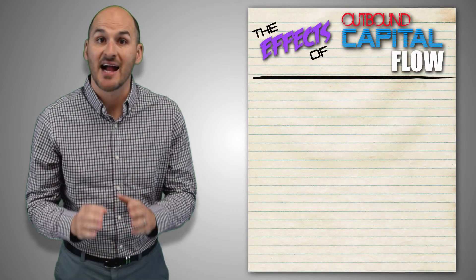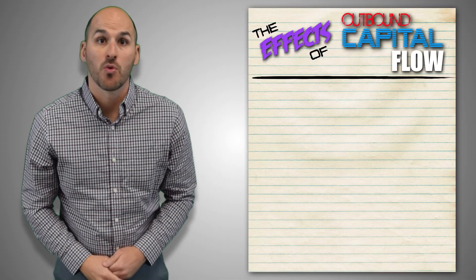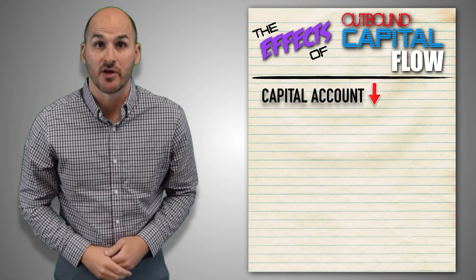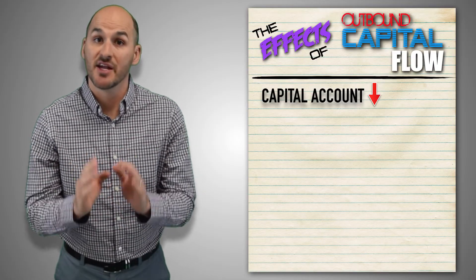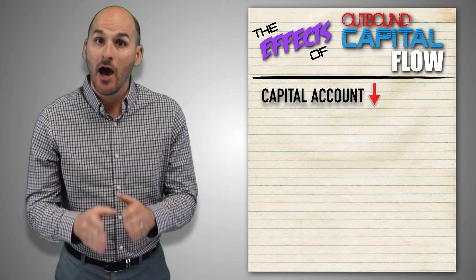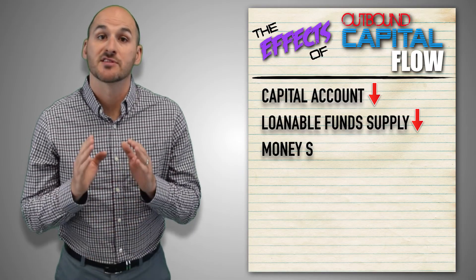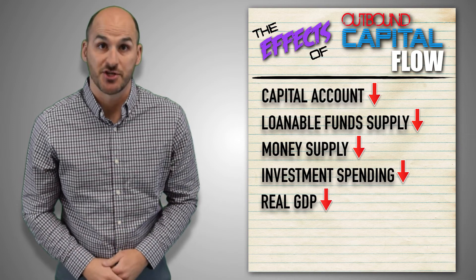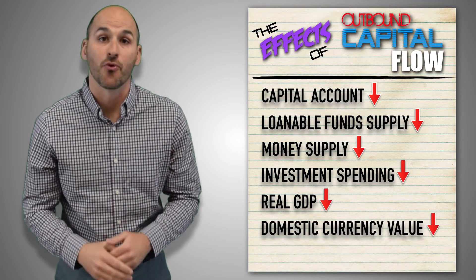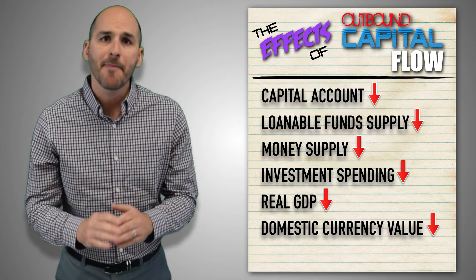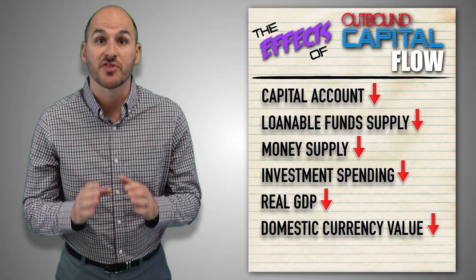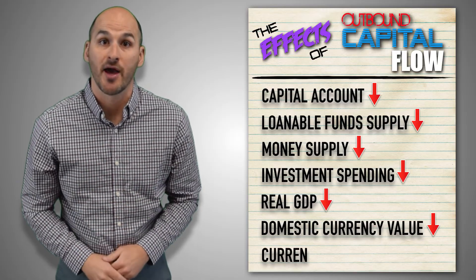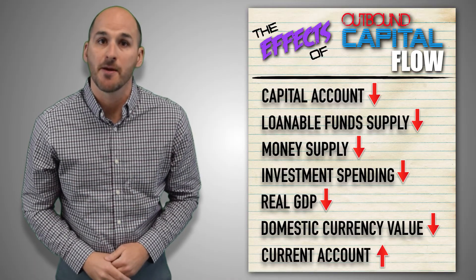So how does outbound capital flow impact an aggregate economy? First, outbound capital flow will cause a country's capital account to move towards a deficit. Capital flow is connected to financial investments in the capital account, and so capital outflow counts as a negative in a nation's capital account balance. Outbound capital flow also decreases the volume of loanable funds available and the supply of money in the domestic economy, which will reduce investment spending by firms and lead to real GDP contraction. It also decreases the value of domestic currency in the foreign exchange market. However, outbound capital flow will also cause deflation. Combined with a decrease in consumption and the depreciation of the country's currency in the forex market, this will drive a country's current account balance towards a surplus, as domestic consumers purchase fewer imported goods and services.